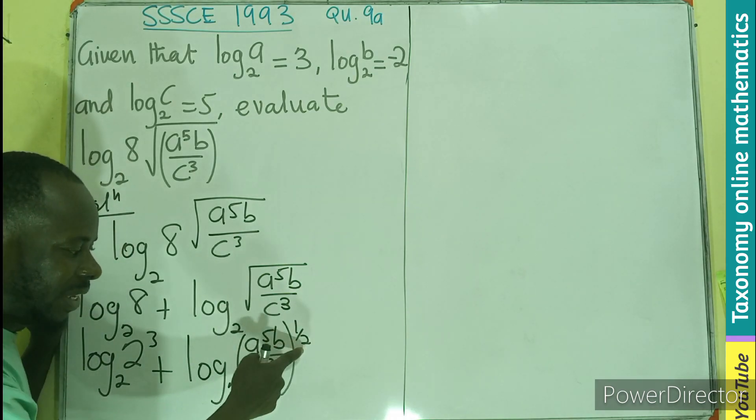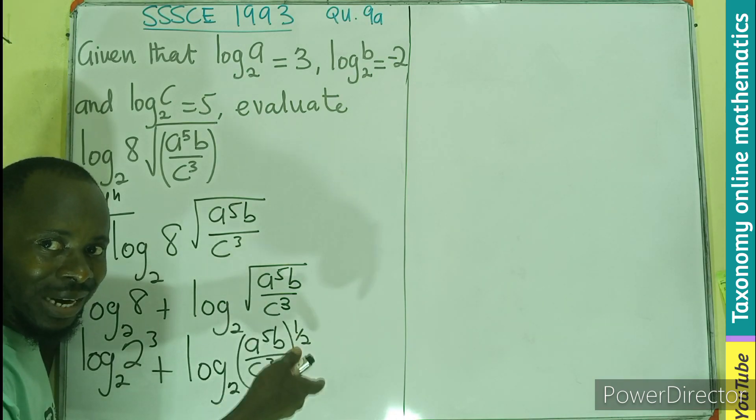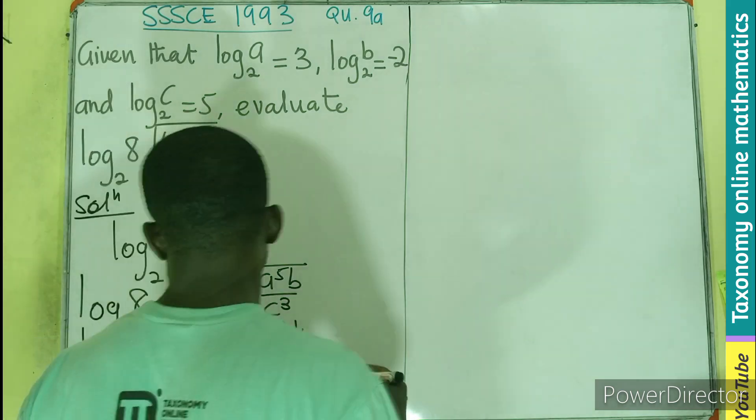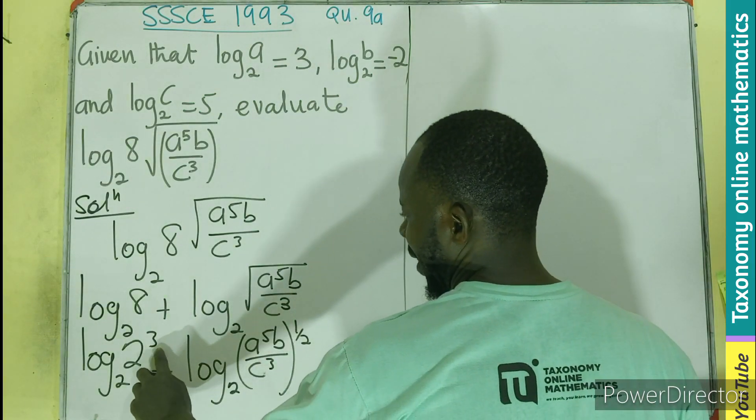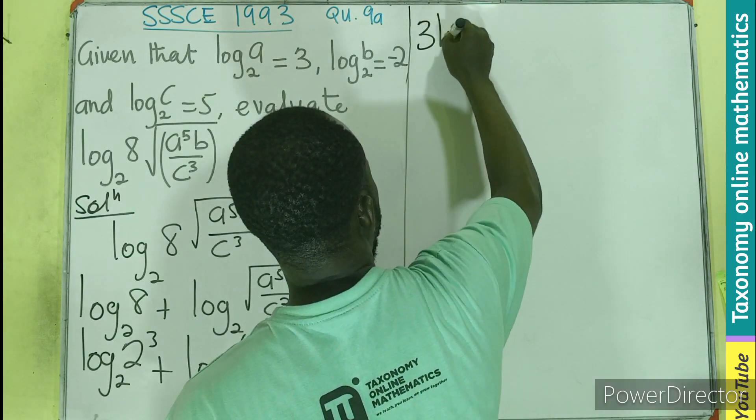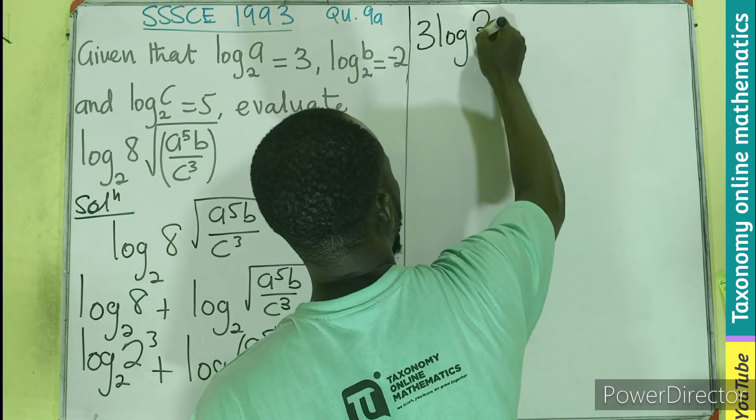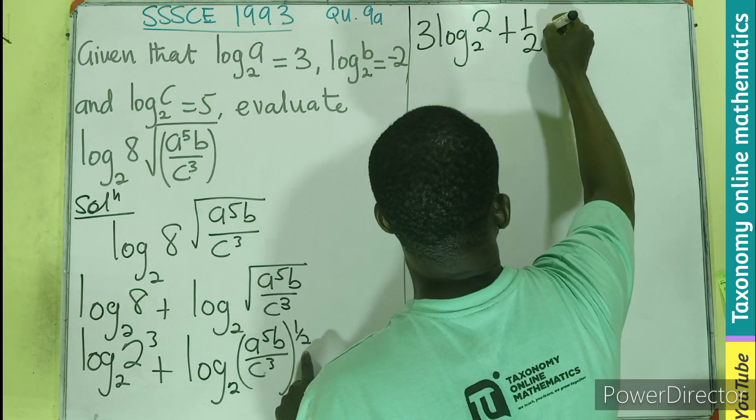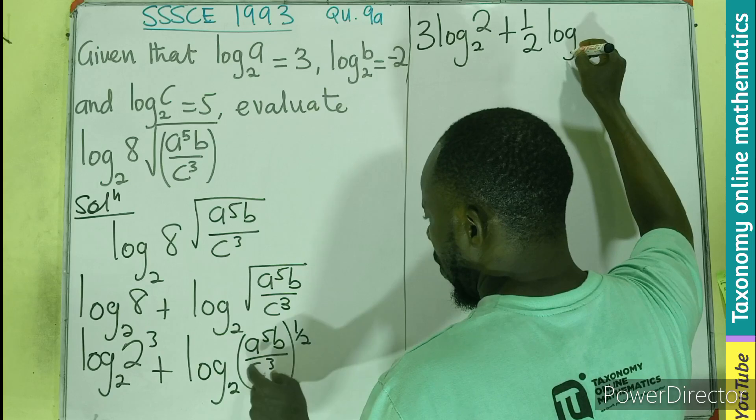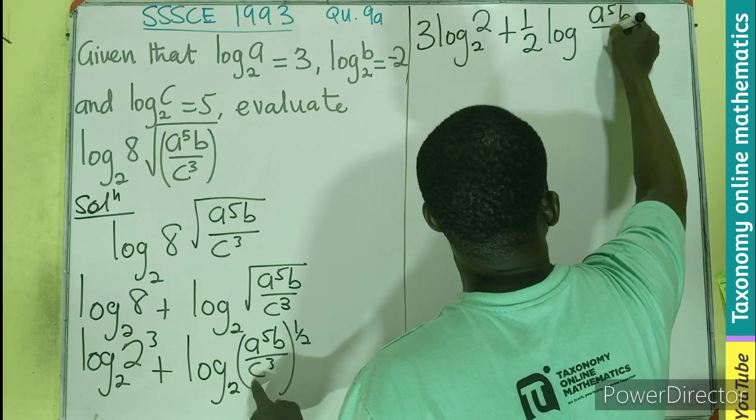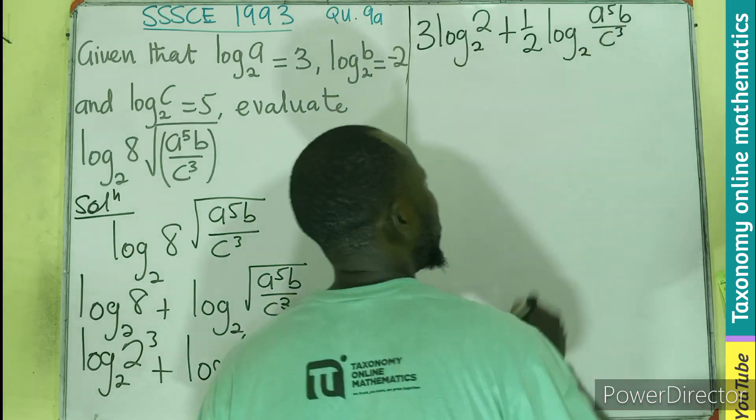And I believe we are seeing that the power here simply means we can use the third law, making the power to multiply the logarithm. In this case, this 3 is also going to multiply to give us 3, the log of 2 base 2 plus the half is coming to multiply the log of A to the power 5, B, divided by C to the power 3, base 2.